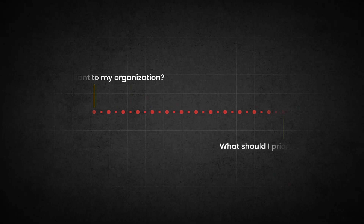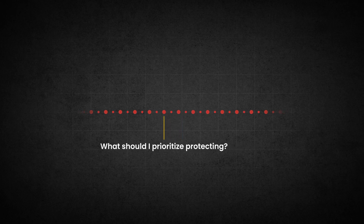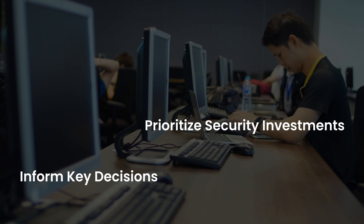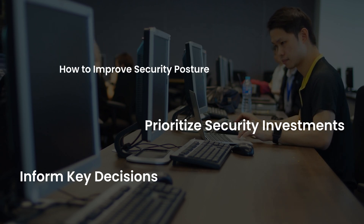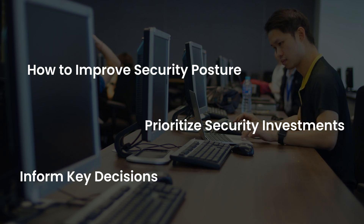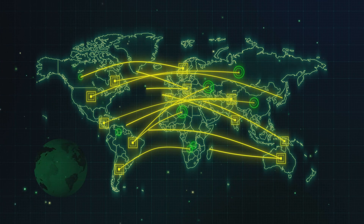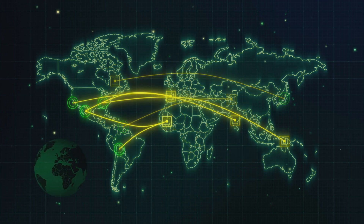Threat modeling helps analysts answer three simple questions: what is important to my organization, what should I prioritize protecting, and what risks threaten these things. Answering these questions gives you a better understanding of what to focus on securing and how to do it. The answers will inform key decisions on your security strategy, what security investments to make, and how to improve your security posture and align it with your organization's needs. It is important to answer these questions even if you don't have a formal threat modeling methodology. These questions guide you from doing security for security's sake to doing it to better protect key business requirements. This shift in perspective makes your security team, technologies, and processes effective in the real world.